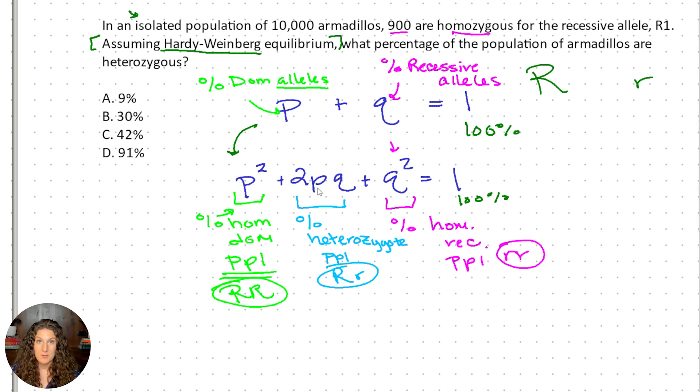Okay, so we have what each of our variables mean. This is the key, because now all we need to do is figure out which variable they gave us and which variable they're asking for. So all this takes is careful reading. We only have two variables here. So in this question, they said 900 out of our 10,000 armadillos are homozygous for the recessive allele. We only use the word homozygous for individuals, so that must mean we're not in equation one, we're in equation two, and we're talking about homozygous for the recessive allele. So which variable do we need?